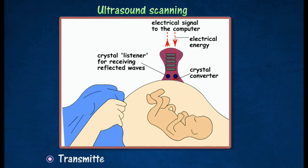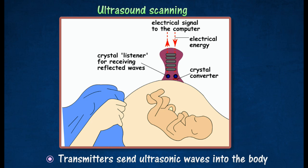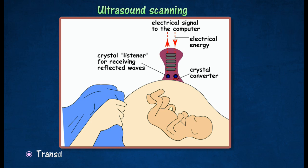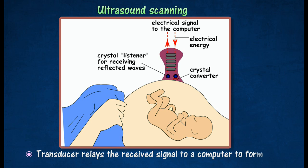Ultrasound produced by a transducer probe is sent into a patient's body. The reflected ultrasound from the fetus is detected again by the transducer. The transducer relays the received signal to a computer to form an image of the fetus on the screen.